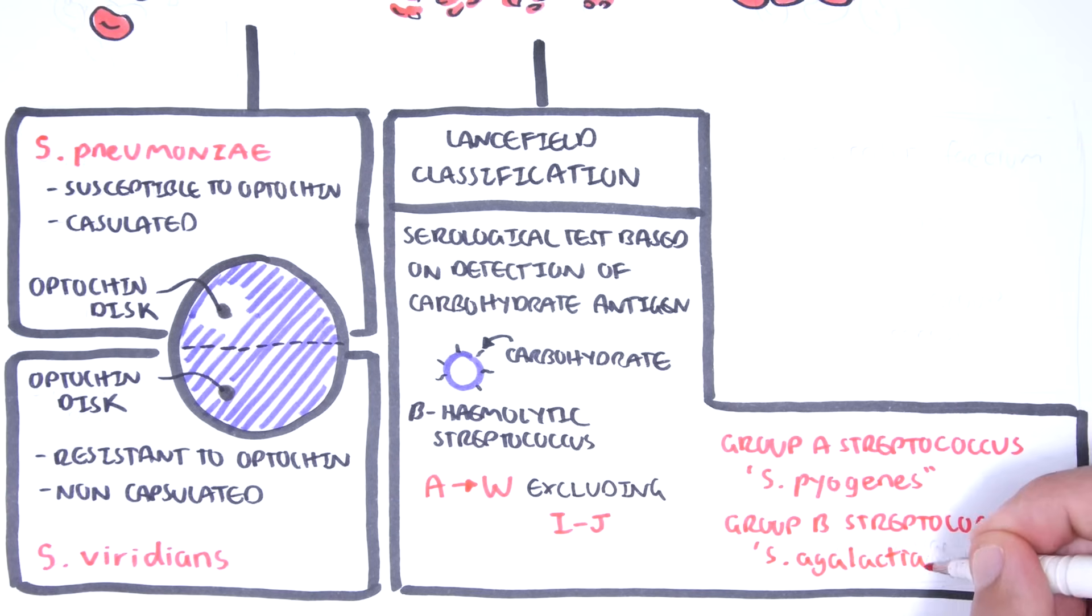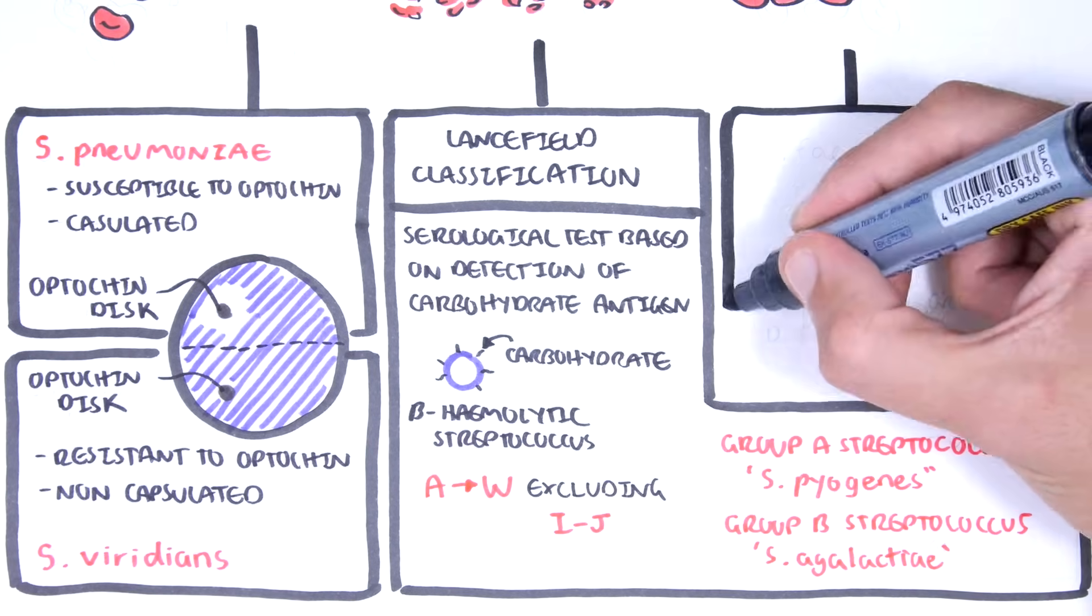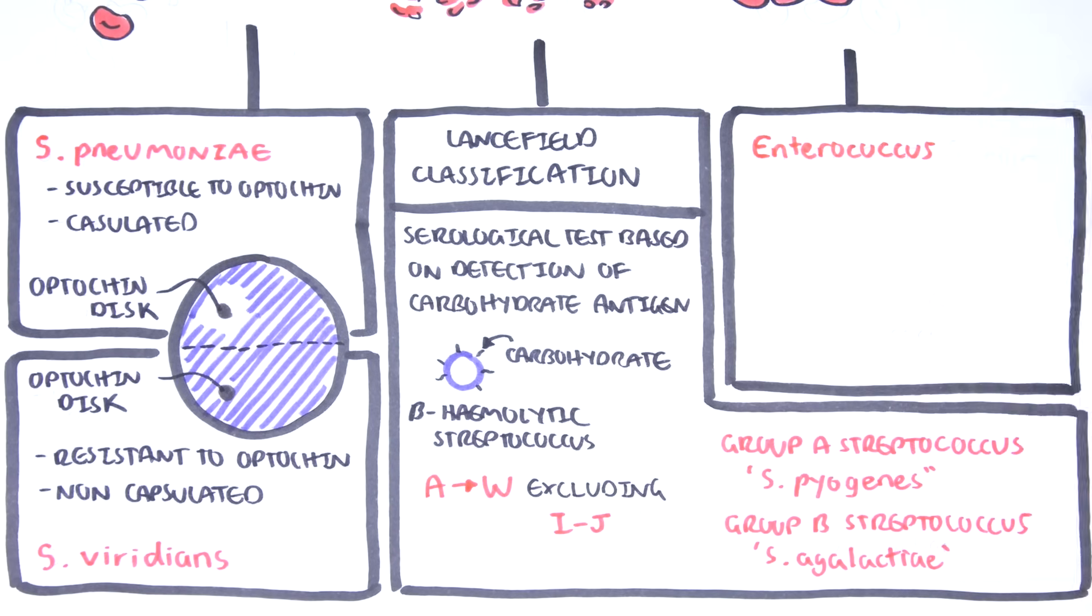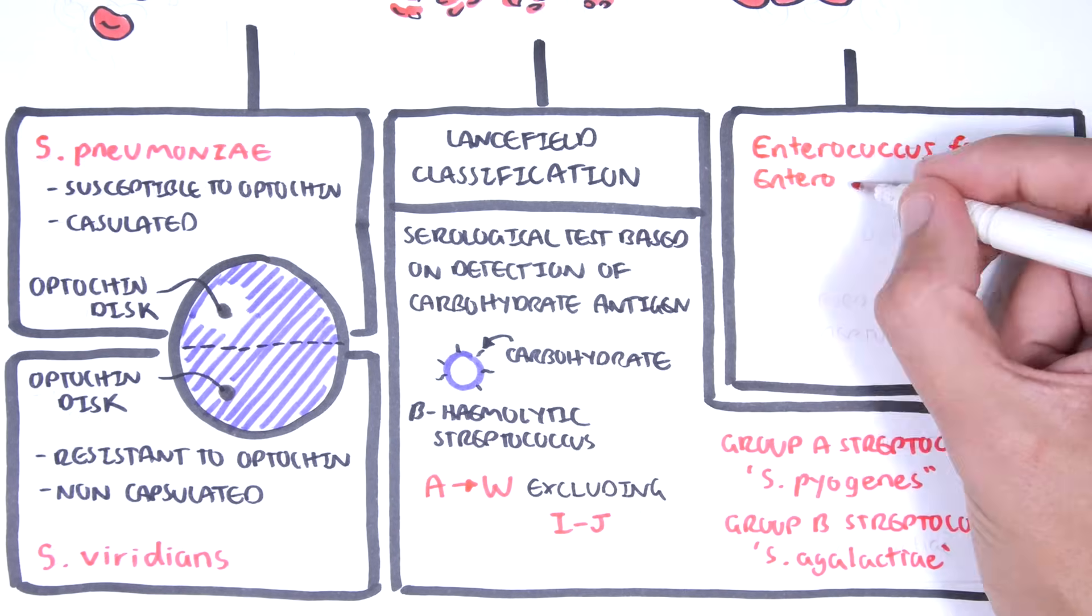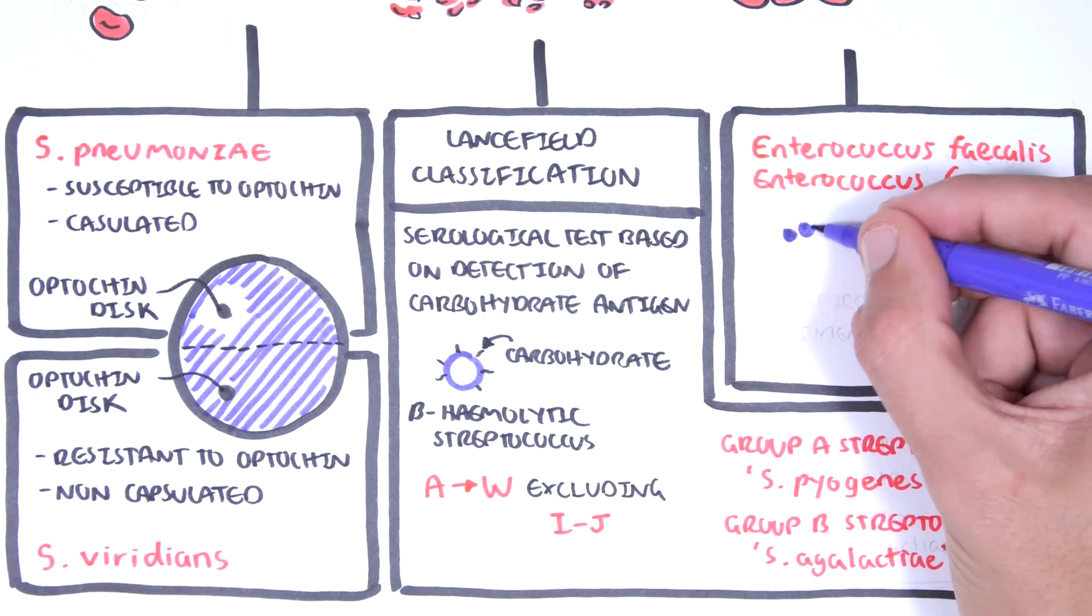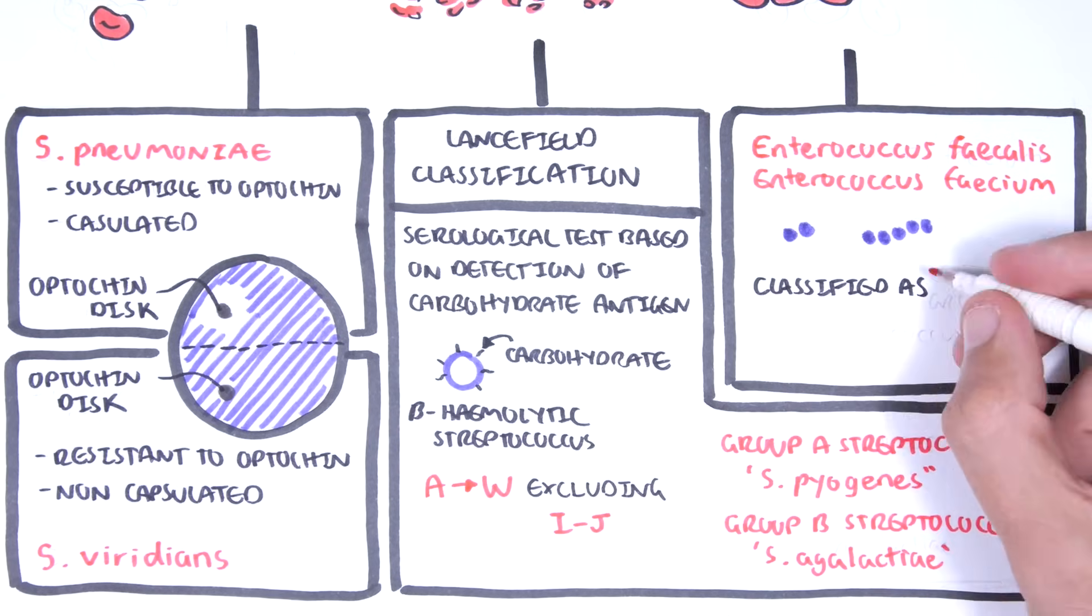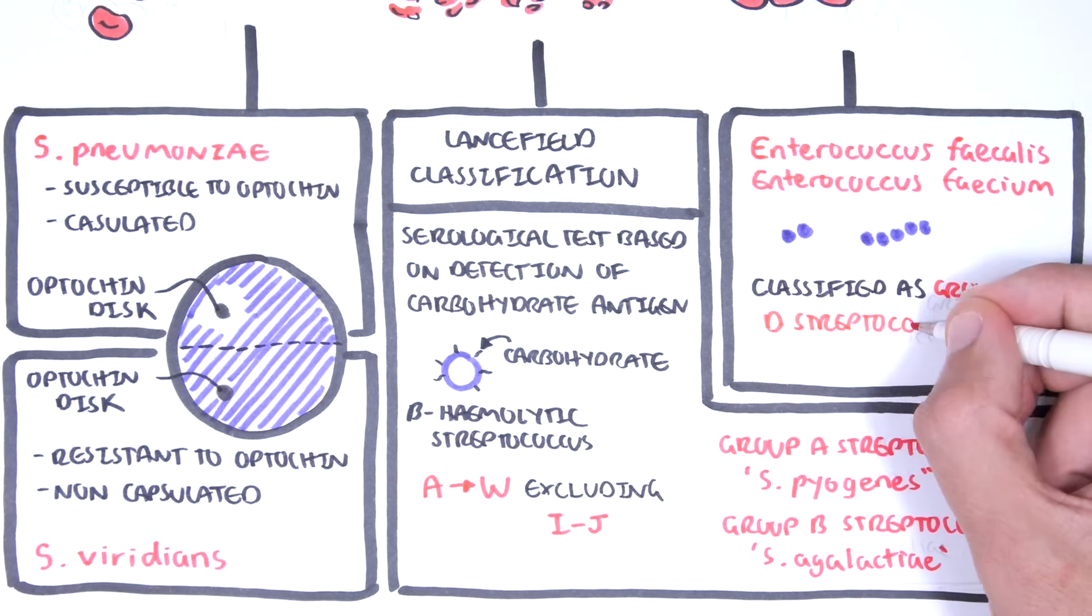The gamma hemolytic streptococci are the enterococci, and these include the enterococcus faecalis and the enterococcus faecium. These are normally found in the gastrointestinal tract, hence feces, and are also classified under the Lancefield classification as group D streptococcus.